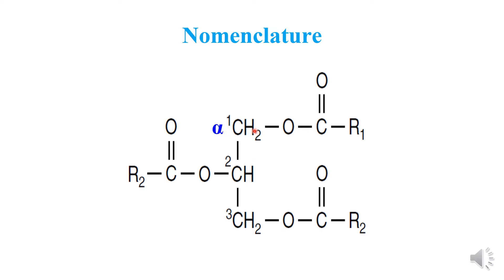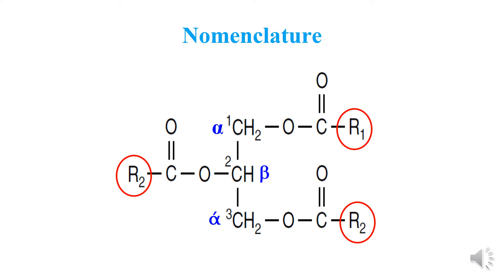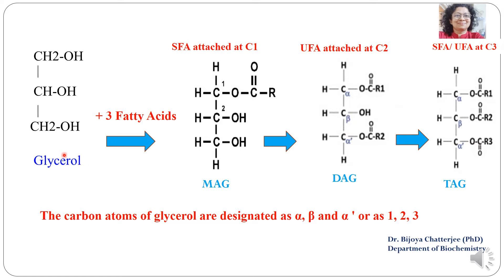The first carbon chain is also known as alpha, the second carbon chain is known as beta, and the third carbon chain is known as alpha prime (alpha dash). Glycerol is a trihydroxy alcohol. When three fatty acids react sequentially, first monoacylglycerol is formed, then diacylglycerol is formed, and finally triacylglycerol is formed. The carbon atoms of glycerol are designated as alpha, beta, and alpha dash, or as 1, 2, and 3.